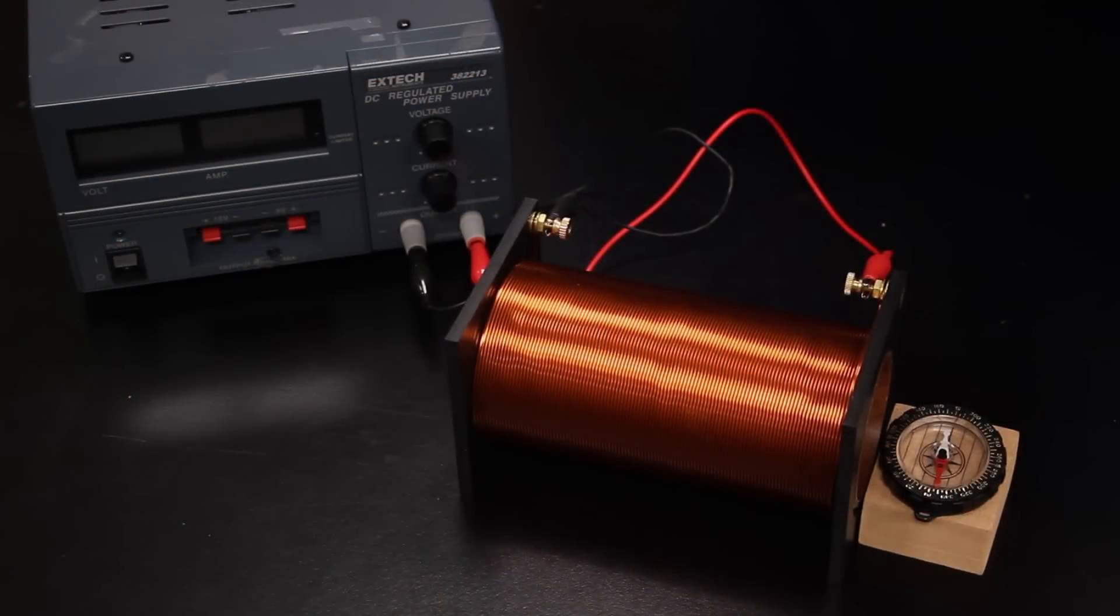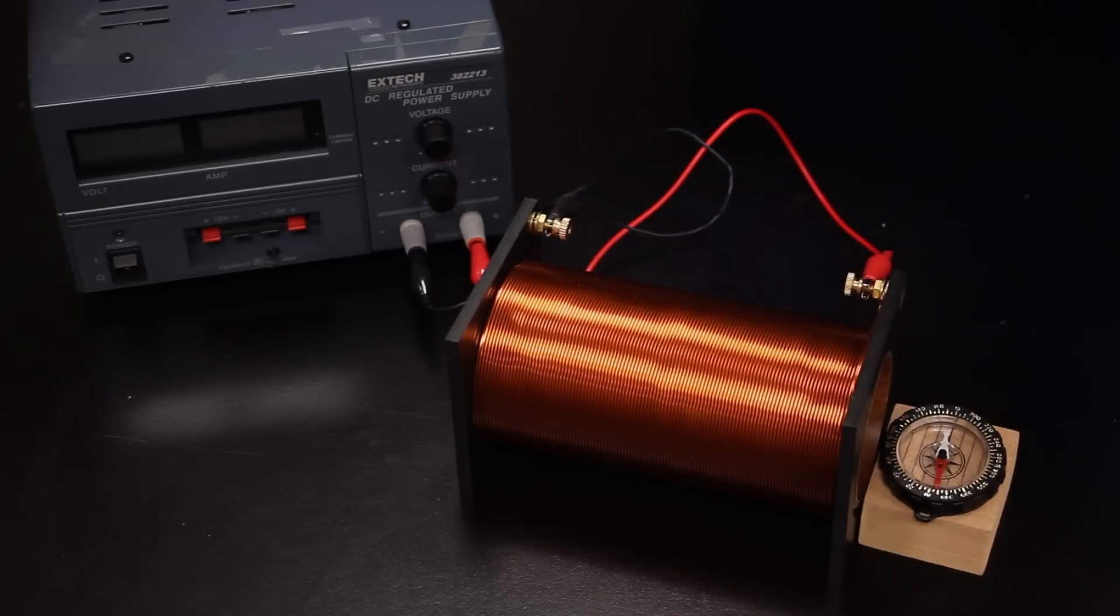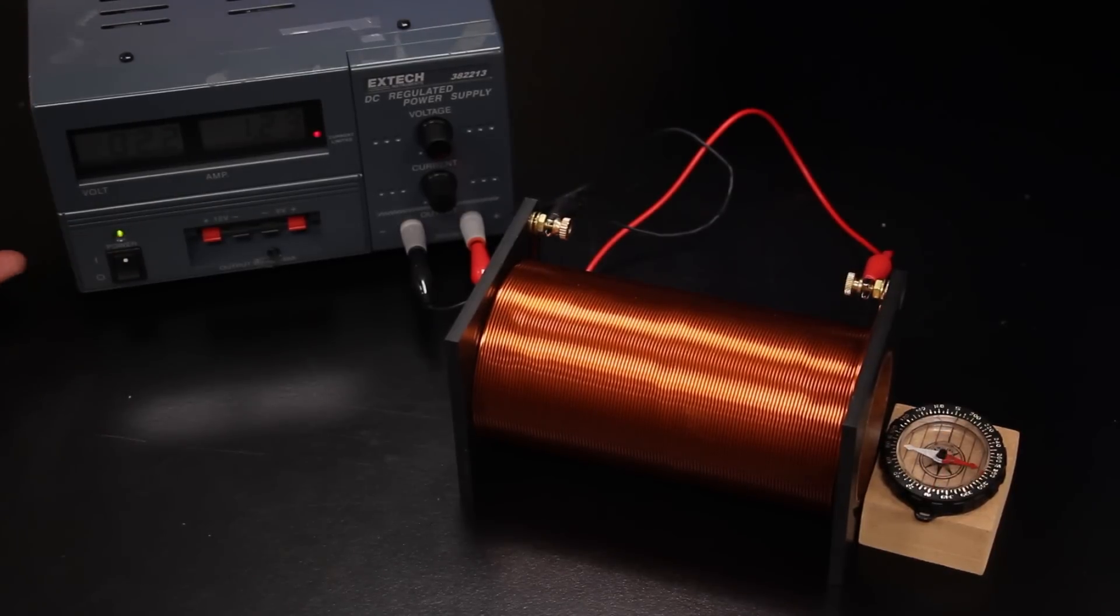When I pass current through this coil, the compass will deflect. It's an electromagnet.